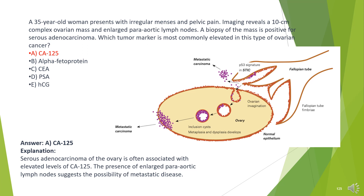The answer is A. CA-125. Serous adenocarcinoma of the ovary is often associated with elevated levels of CA-125. The presence of enlarged para-aortic lymph nodes suggests the possibility of metastatic disease.